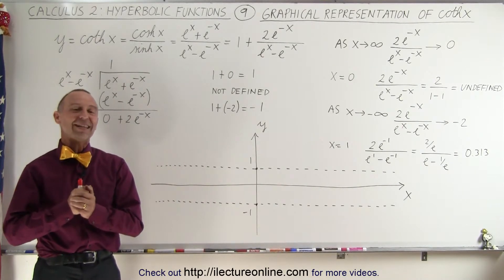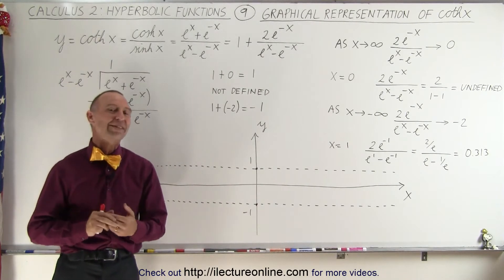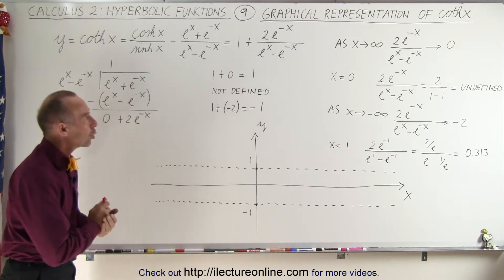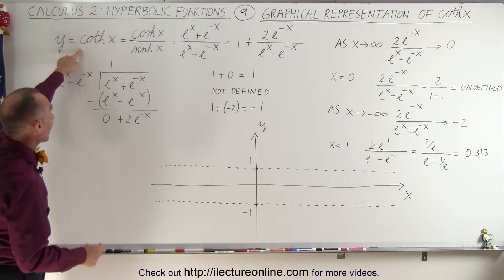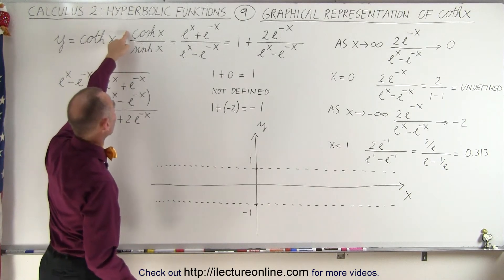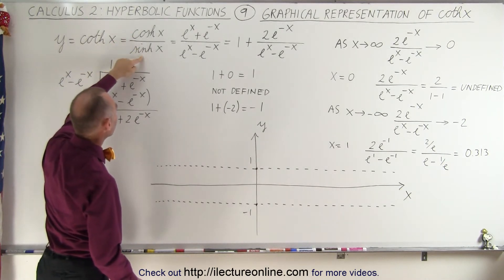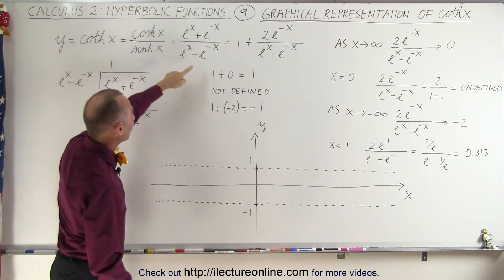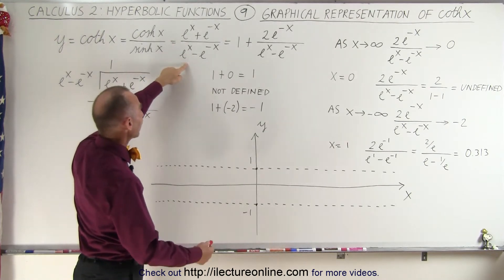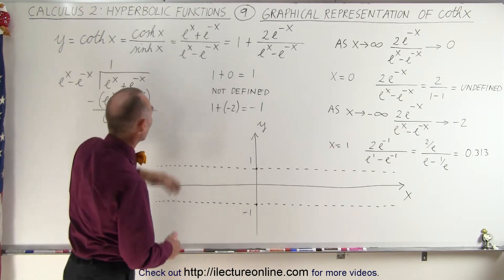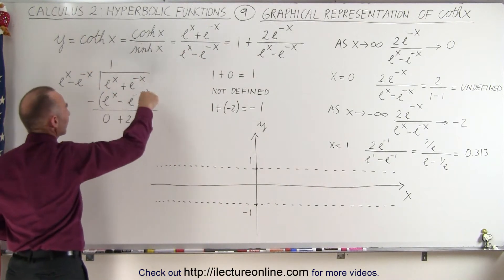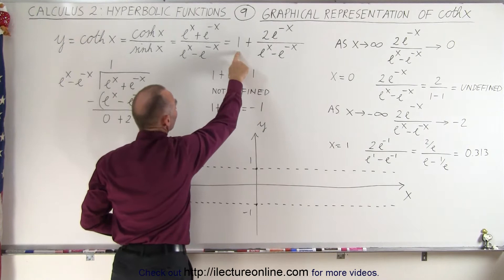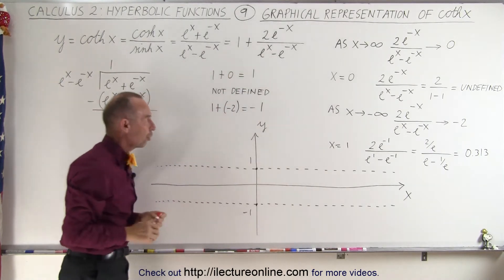Welcome to iLecturOnline. Let's take a look at the graphical representation of the hyperbolic cotangent. The hyperbolic cotangent is defined as the ratio of the hyperbolic cosine divided by the hyperbolic sine, which gives us this representation in terms of e to the x and e to the minus x. If we divide the denominator into the numerator, we can write the result as 1 plus that particular ratio.